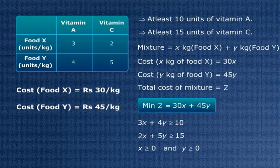So how can we formulate this problem? Minimize Z equals 30X plus 45Y, subject to the constraints: 3X plus 4Y is greater than or equal to 10, 2X plus 5Y is greater than or equal to 15, X is greater than or equal to 0, and Y is greater than or equal to 0. So this is how we formulate a linear programming problem.